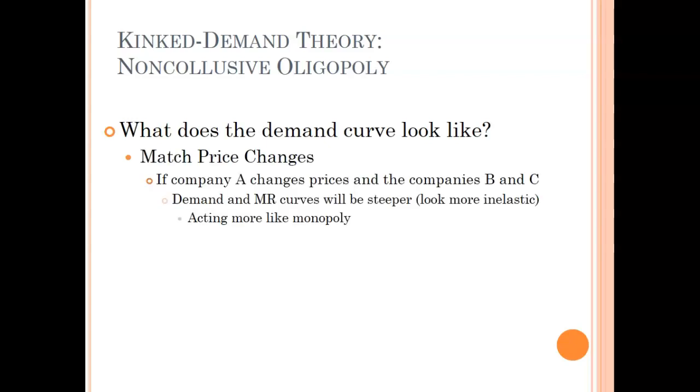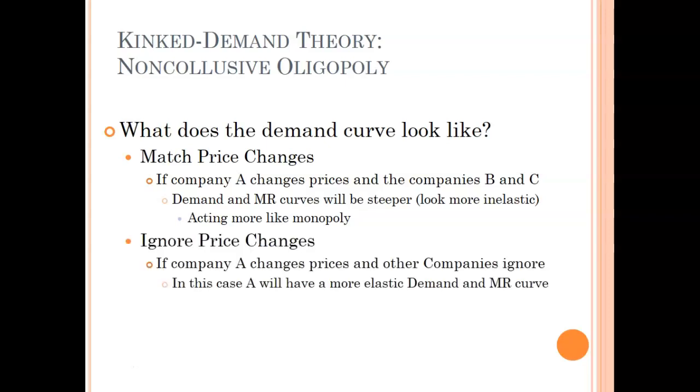So the first one, kinked demand curve. This is assumed to be non-collusive oligopolies. So they're not working together, but they're definitely eyeballing each other. So what does it look like? Well, we have match price changes. So we have companies A, B, and C.